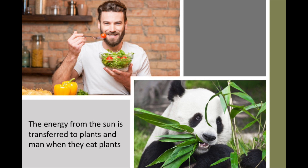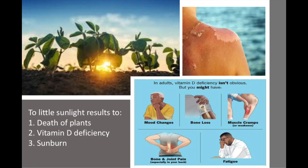Man and animals also benefit from the sun's effect on their bodies because sunlight on skin produces vitamin D, which is important in the formation of strong bones. Man and animals also get vitamin D by eating plants. Too little sunlight can cause plants' water to evaporate and lead to their death. Man and animals can suffer a deficiency in vitamin D, which leads to brittle and weak bones. Too much sun can cause the skin to tan or burn.